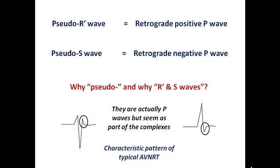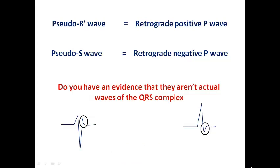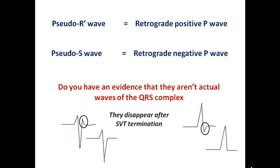This sign is very suggestive of typical AVNRT, in which the antegrade limb is the slow pathway and the retrograde limb is the fast pathway. Evidence that these are not actual QRS waves is simple: they disappear after SVT termination, confirming they were retrograde P waves rather than part of the complex.